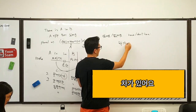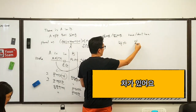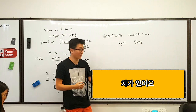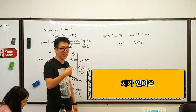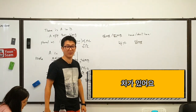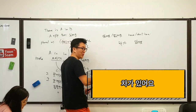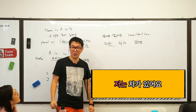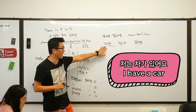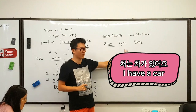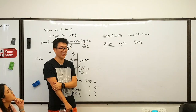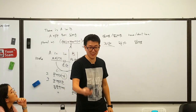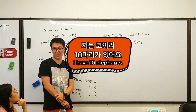Like this: 차가 있어요. 차가 있어요 means 'there is a car'. Now I want to say 'I have a car' — what you just need to do is add 저는 in front, meaning 'I have a car': 저는 차가 있어요. Now how to say 'I have ten elephants'? 저는 코끼리 열 마리가 있어요.